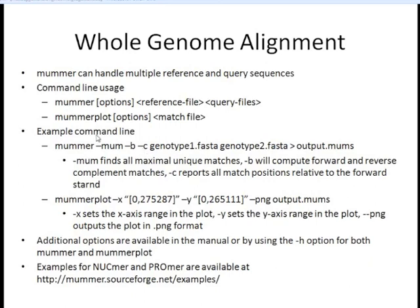Looking at an example, we start with MUMmer. We give it the --mum flag, which tells the program to find the maximal unique matches. We give it the -b option, which tells it to compute both forward and reverse complement matches. We give it the -c option, which says although you're checking in the forward and reverse, only output them relative to the forward strand. Then we give it our FASTA sequence for genotype 1 and our FASTA sequence for genotype 2, and use the greater-than sign to redirect output to a specified file.